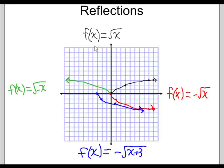Alright, so here's an example. If we have f(x) = √x, which is in black here, we can reflect that across the x-axis. In red, it's reflected across the x-axis, and all we did was put a negative sign on the outside of the whole function.